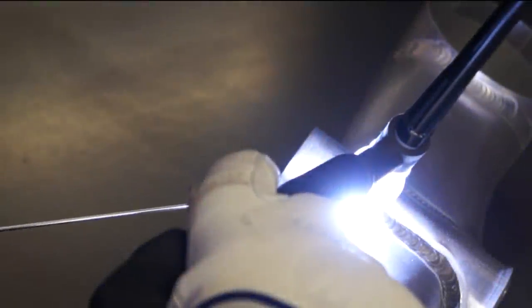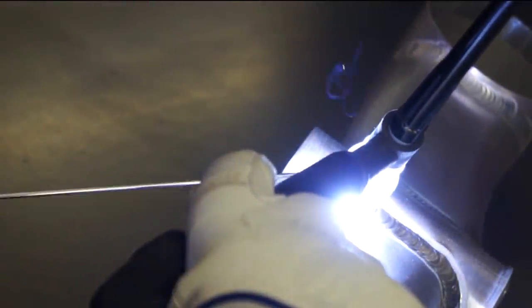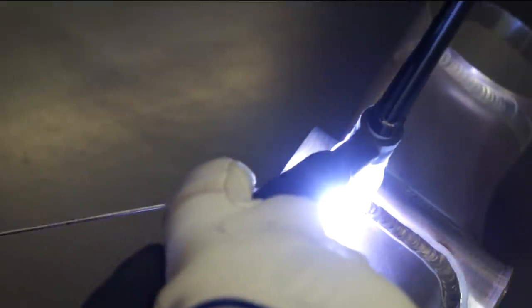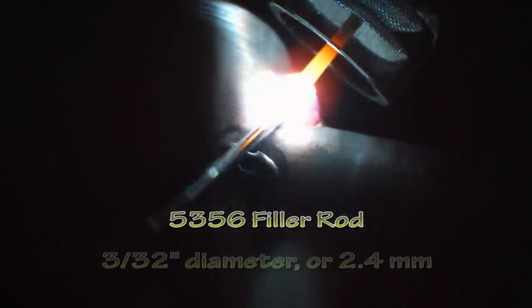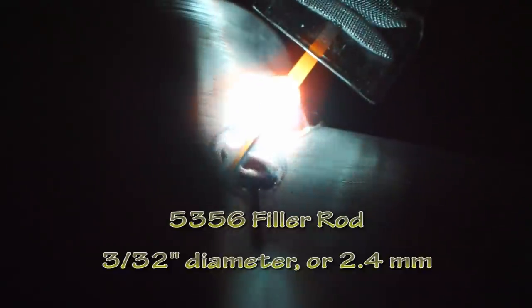With the tacks completed, I'll finish weld each joint on the bench so I can rotate the parts to allow full access for all the joints. The filler rod is 5356 alloy, 3/32 inch diameter or 2.4 millimeters.